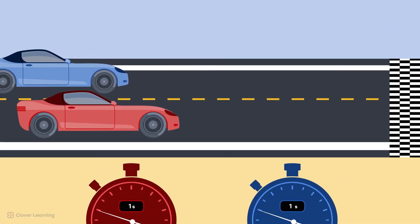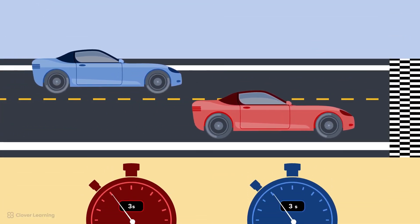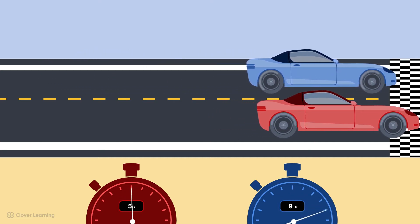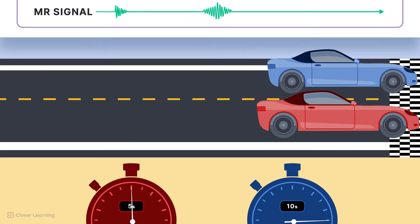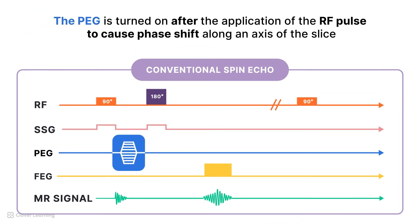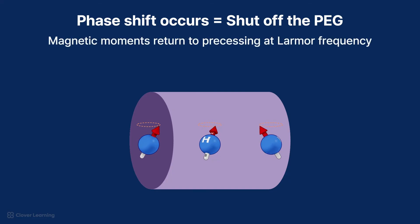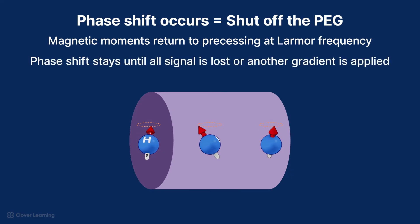Think of phase encoding like marking each car in a race with a slightly different start time. By knowing their start times and when they cross the finish line, you can figure out their positions in the race. The PEG is turned on after the application of the RF excitation pulse in order to cause phase shift along the short axis of the slice. Once phase shift occurs, we shut off the PEG. This allows the magnetic moments to return to precessing at the Larmor frequency, but the phase shift stays until all signal is lost or another gradient is applied.